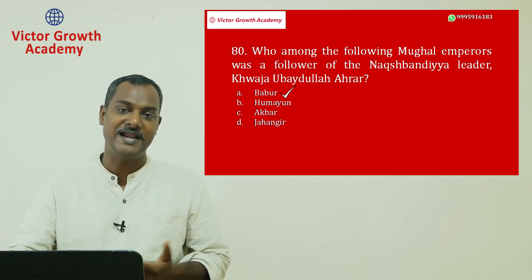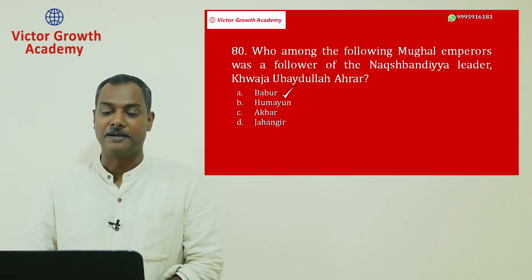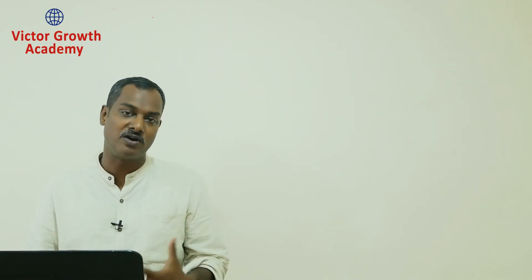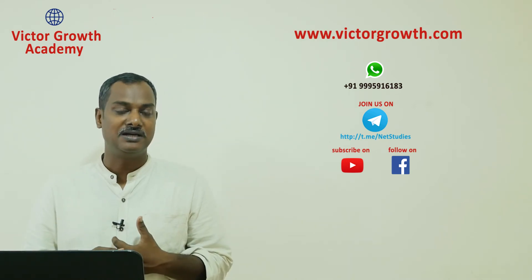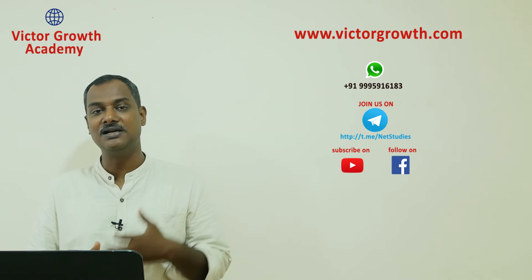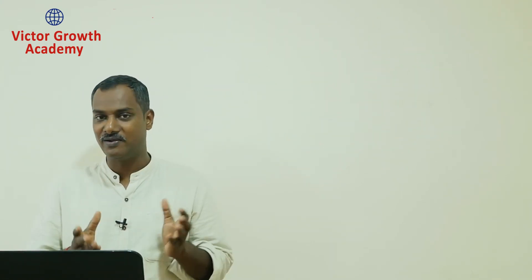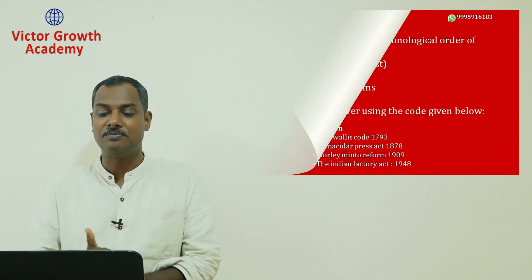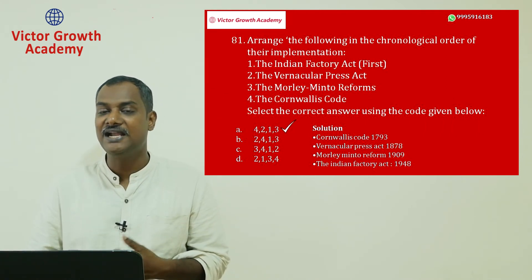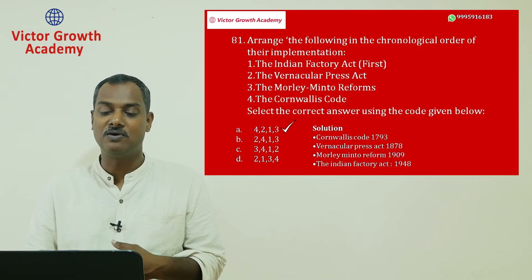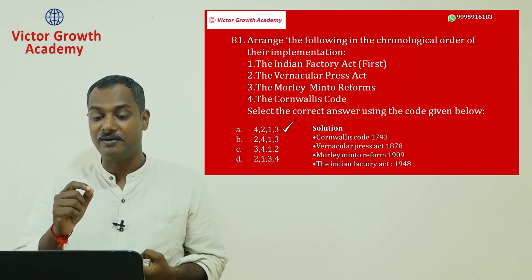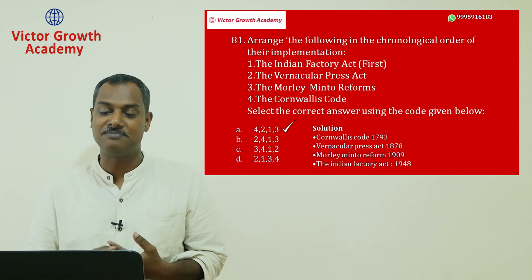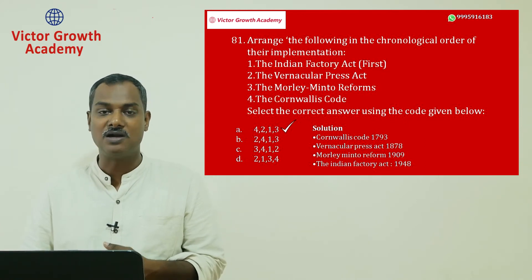The UPSC always asks chronological order questions in history, either ancient or modern India. Question 81 involves four events: the Indian Factory Act, the Vernacular Press Act, Morley-Minto Reforms, and the Cornwallis Code. Morley-Minto Reforms happened in 1909, where communal electorate was introduced and Muslims were given separate electorate. The Vernacular Press Act came in 1878 under Lord Lytton.